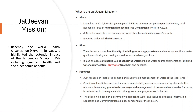The key goals of the Jal Jeevan Mission include ensuring the functionality of existing water supply systems and connections, water quality monitoring and testing, and promoting sustainable agriculture through a holistic approach to water usage. The mission stands out with its integrated approach to demand and supply-side water management at the local level, incorporating essential elements like rainwater harvesting, groundwater recharge, and household wastewater management. The mission operates on a community-centric model, fostering collective responsibility towards water through information, education, and communication efforts.